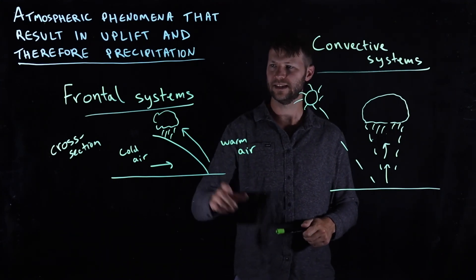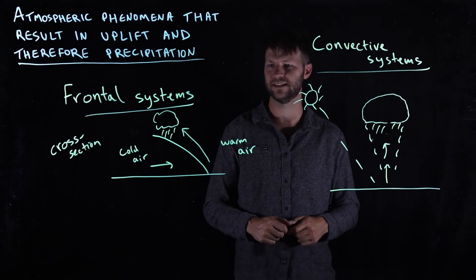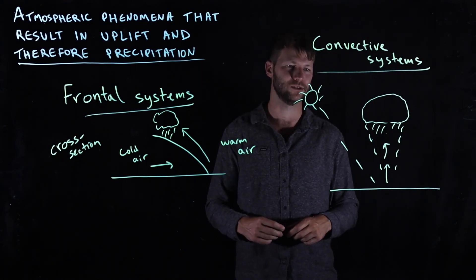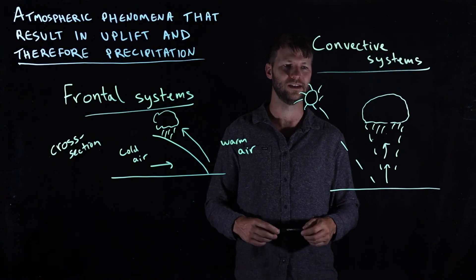The other point is that these frontal systems can persist for days, whereas convective thunderstorm systems are typically fairly short-lived, lasting for a few hours.